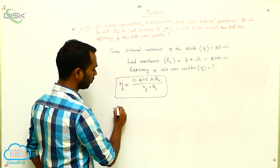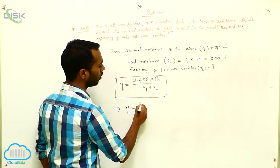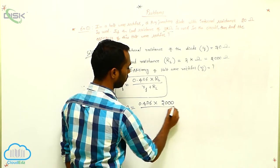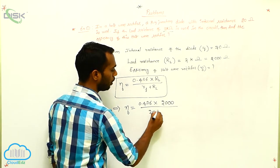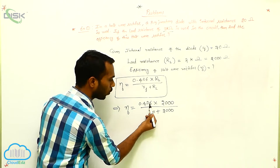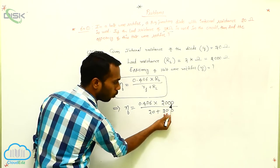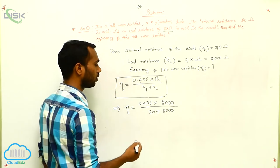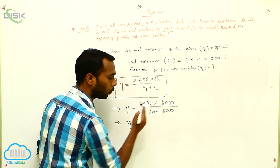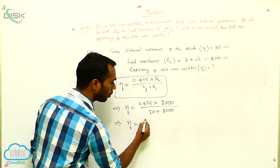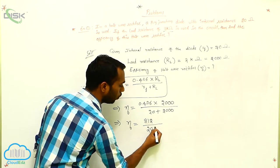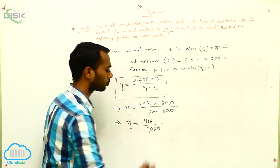Substituting the values: eta equals 0.406 multiplied by 2000 divided by (20 plus 2000). Removing the decimal by multiplying through, 0.406 becomes 406. So eta equals 406 multiplied by 2, which is 812, divided by (20 plus 2000), which is 2020.